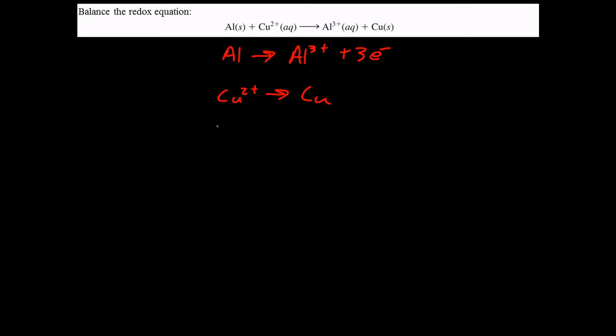So again, just whichever side of the half reaction is higher in terms of its charge, add electrons to that side until it's the same charge as the lower one. It's the only way you could balance the charge. Same thing here.